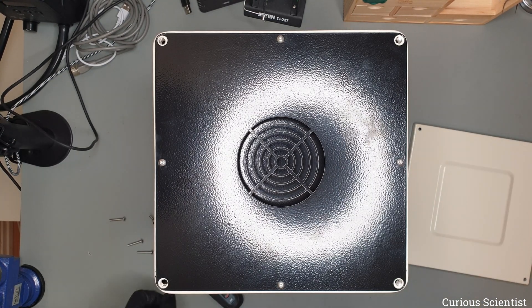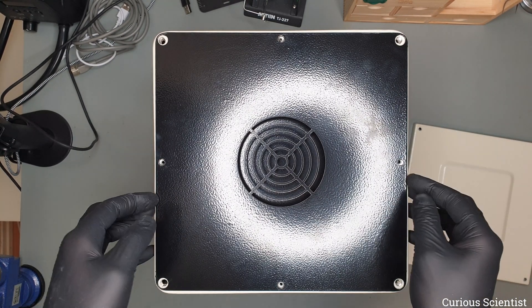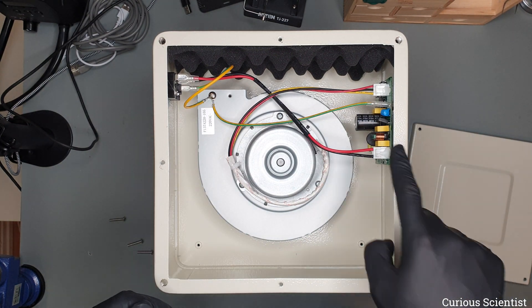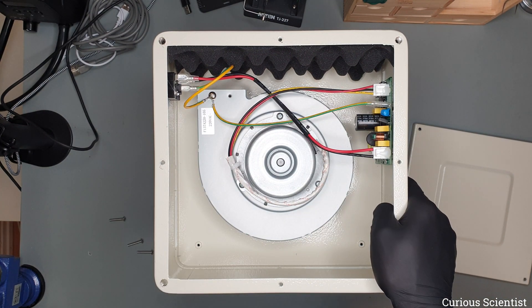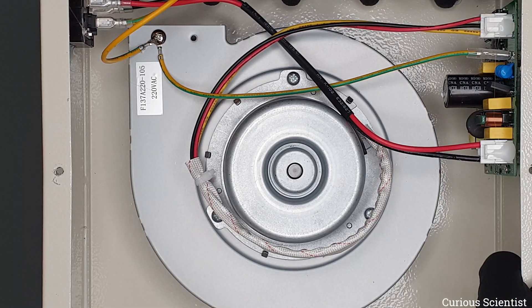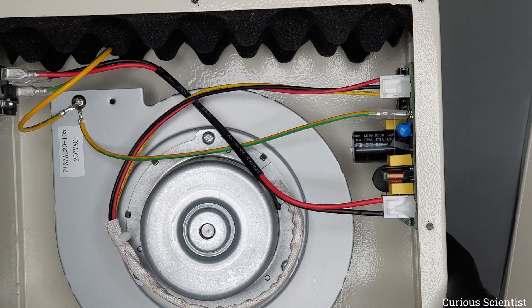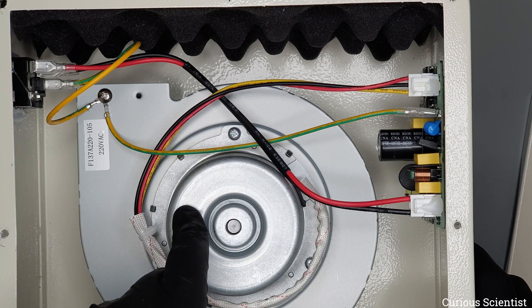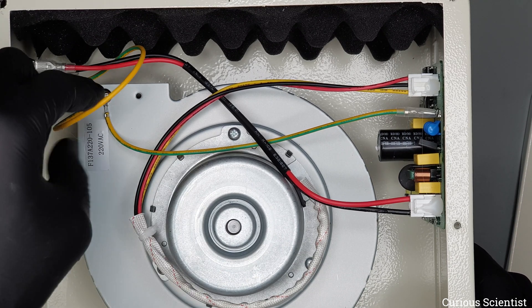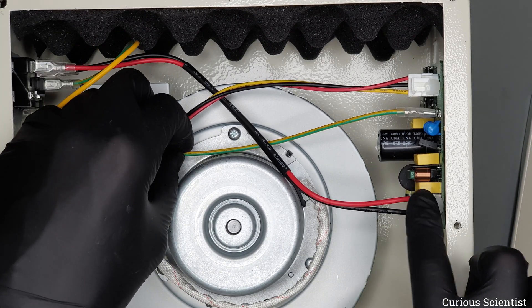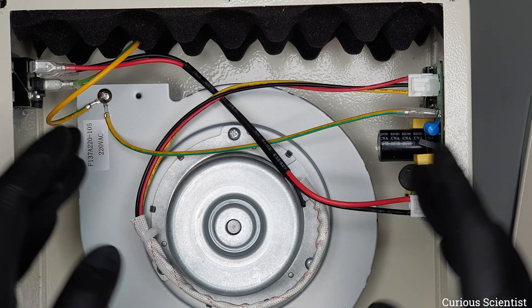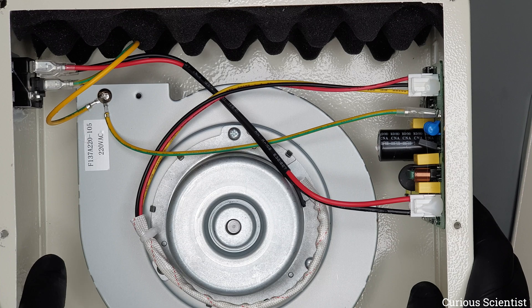So actually this is the motor and here are the electronics. So I can zoom in. The fan is grounded and then the ground comes in here and then it goes to the panel as well. And I assume that through the screws which fix the fan to the housing, the housing is also grounded as well.